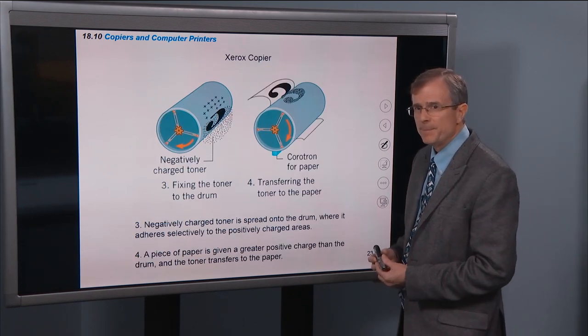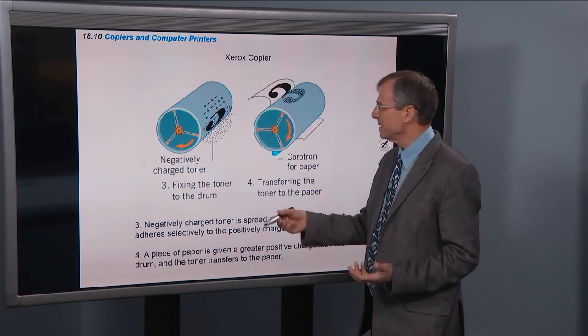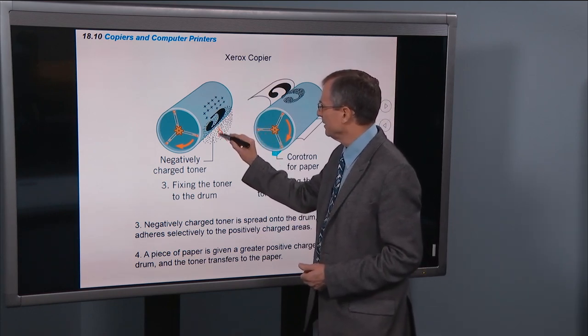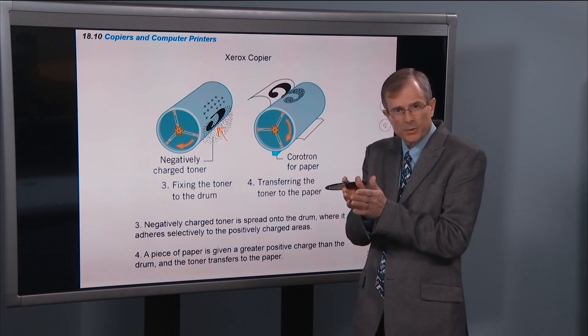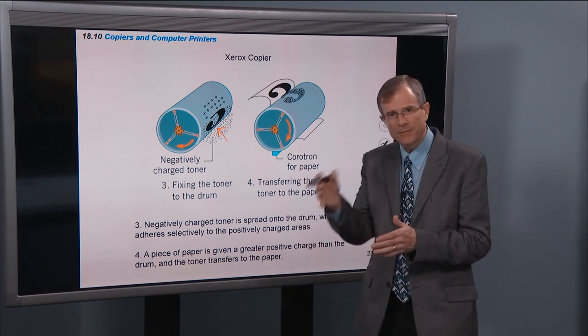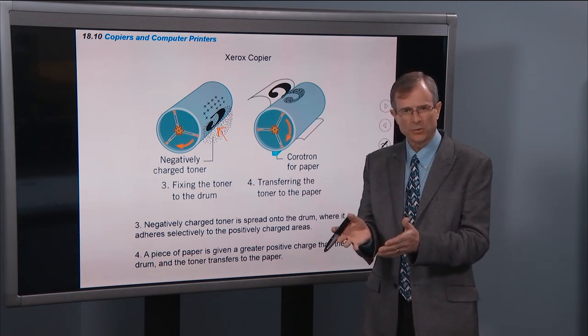And step three is that you spread toner on here. It's negatively charged. So this negatively charged toner is sprayed out onto the drum, attracts the positive charge. And then now you have a drum that you could see the actual toner on.